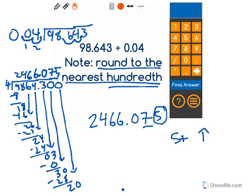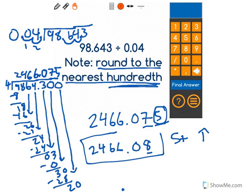And here, as you can see, we have a 5. So this 7 is going to become an 8. The other digits will remain what they were. And since it wants us to round to the nearest hundredth, we will stop our number in the hundredths place, leaving us with our answer 2,466.08.